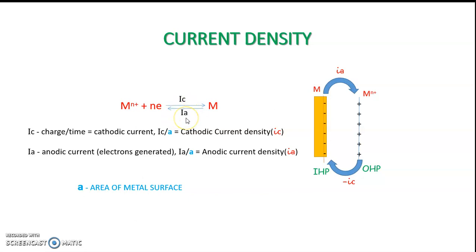For this anodic reaction, or oxidation reaction, or dissolution reaction, the current generated — or the charge per unit time generated — is given as capital I_A, which is known as anodic current. Similarly, for the reduction process or deposition process, the current generated is cathodic current, I_C.